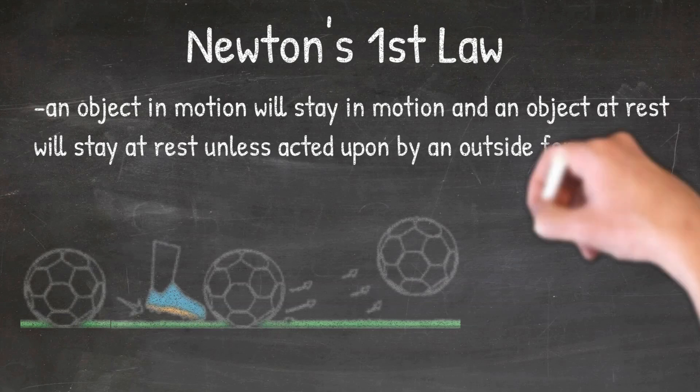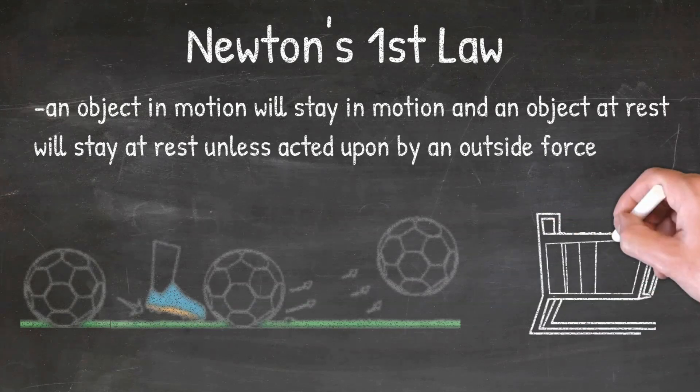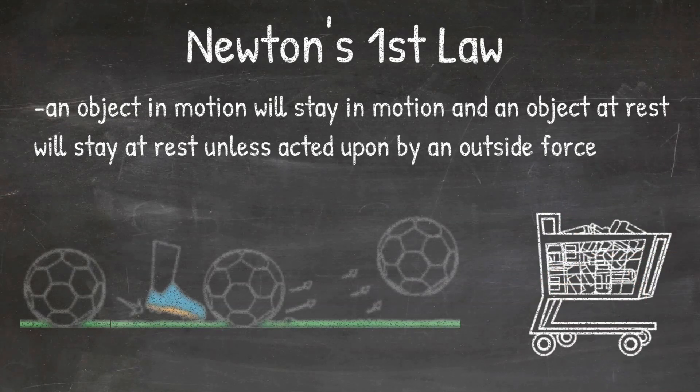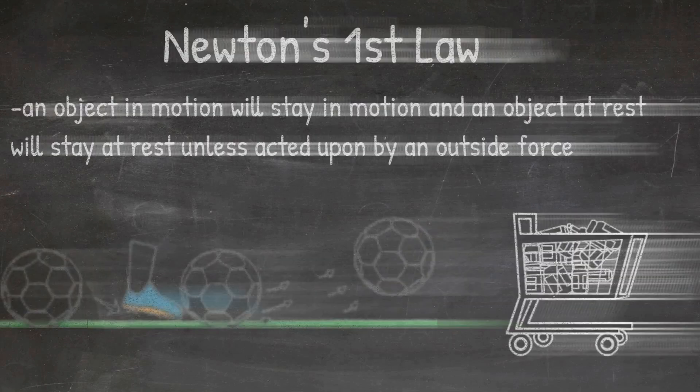Or, if I have a shopping cart that is rolling through the parking lot, the shopping cart will keep moving until an outside force acts upon it to stop it. Examples of an outside force acting upon the shopping cart could be friction with the ground, or you sticking your hand out and using your force to stop the cart.